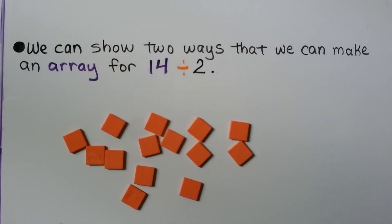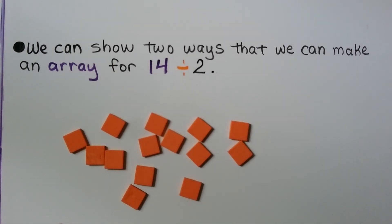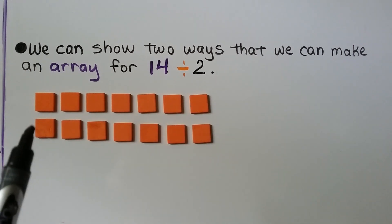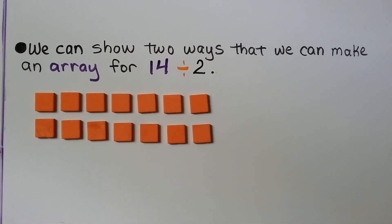We can show 2 ways to make an array for 14 divided by 2. We can use 2 as how many rows we have, or 2 could be how many are in each row. We count out 14 counters and put them in 2 equal rows — 2 equal groups. We see there are 7 in each group, so 14 divided by 2 is equal to 7.